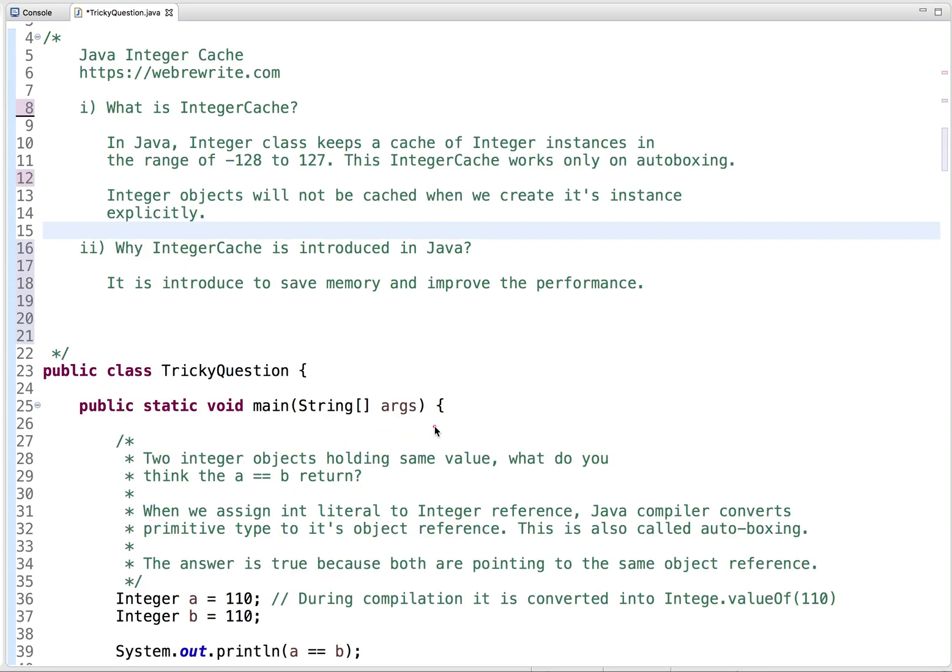So let's start with what is integer cache. So in Java integer class keeps a cache of integer instances in the range of minus 128 to 127 and this integer cache works only on autoboxing.